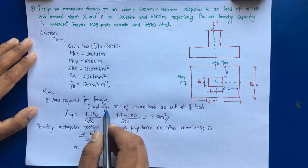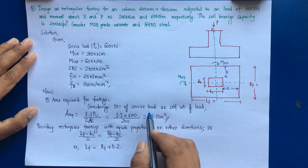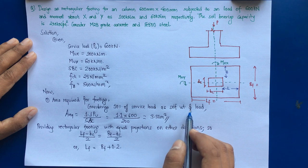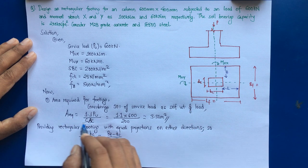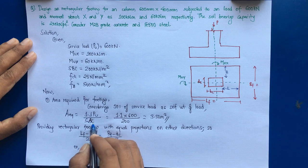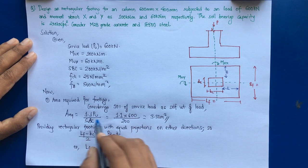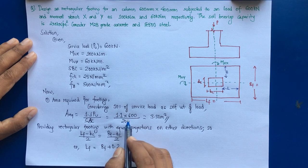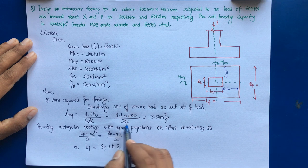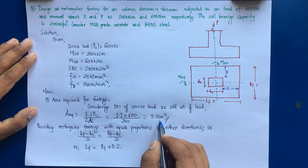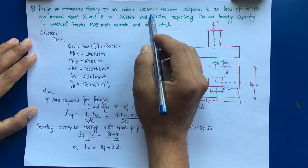The first step is to calculate the area required for the footing, considering 10% of service load as self-weight. Area required = 1.1 × P / SBC = 1.1 × 600 / 200 = 3.30 m². This is the required footing area.